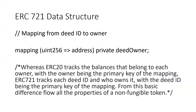In ERC-721, we're mapping a unique identifier to an address — the equivalent of a social security number for that object — saying this object, say number 17, is owned by this address. This is the opposite of what we saw with ERC-20 balances. With ERC-20 fungible tokens, an address on the left is mapped to a uint256 on the right representing the total number of tokens owned. In ERC-721, the unique identifier is on the left and the address that owns it is on the right.